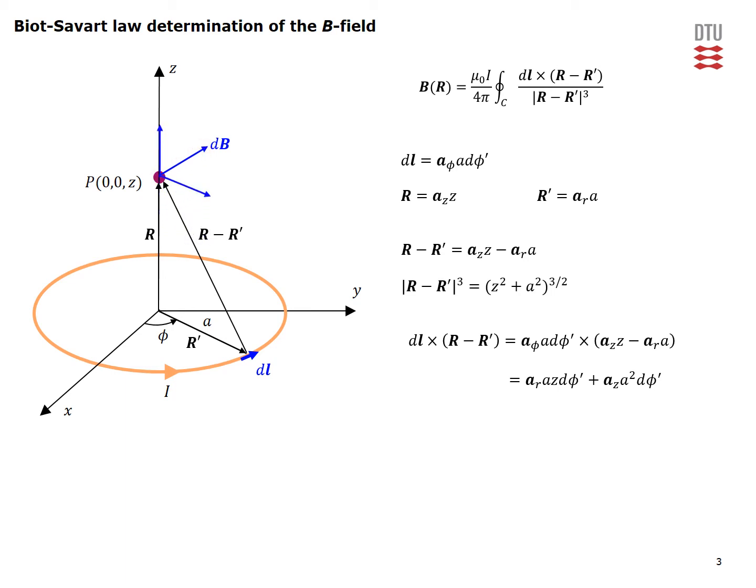You can decompose this one into a z component proportional to that term and an r component proportional to that term. For this DL element there is another DL element at a diametrically opposite location which will give rise to another dB element that can also be decomposed. Those two will cancel each other so you see you will only have a contribution in the z direction.